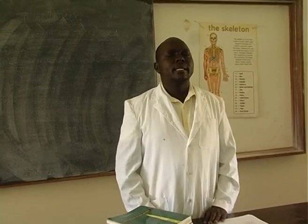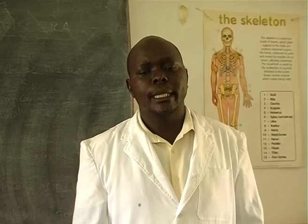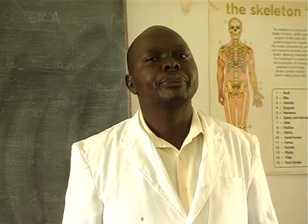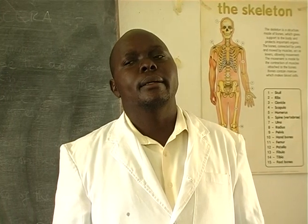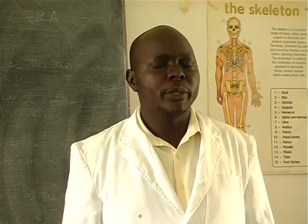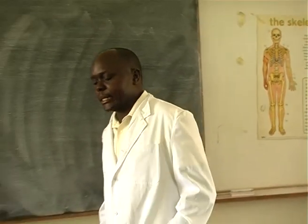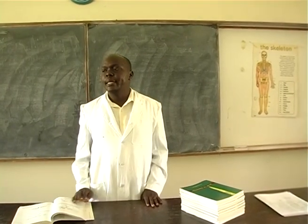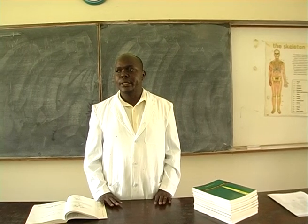This is our third lesson, and we are going to look at the circulatory system. We looked at the digestive system, or the alimentary canal, and then the genital system. Now we are going to look at the circulatory system.